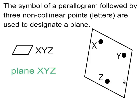A plane is a flat surface that extends infinitely, and you need three non-collinear points to designate a plane. So X, Y, and Z, shown here, are clearly non-collinear. They don't lie on the same line. And so you draw a little parallelogram symbol following capital letters X, Y, and Z. That's how we designate that plane.